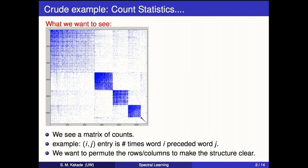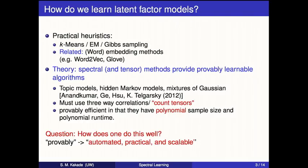Many of these latent variable models we seek to estimate in practice have this as the underlying subproblem. How do we learn some of these latent variable models? There are lots of heuristics out there like K-means and EM. In the NLP setting, it's related to some of these embedding methods. With regards to theory, a number of us have been working on provable methods for estimating hidden structure.